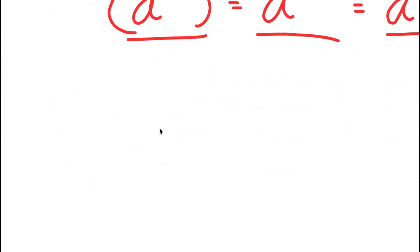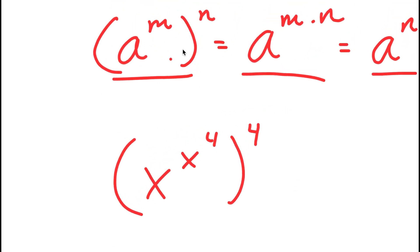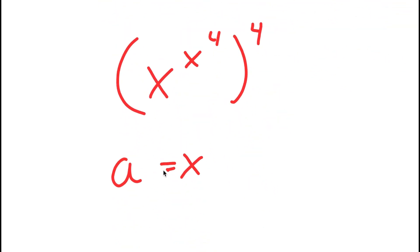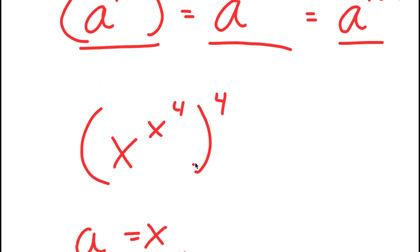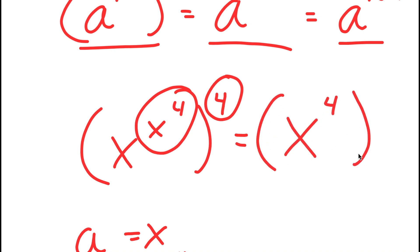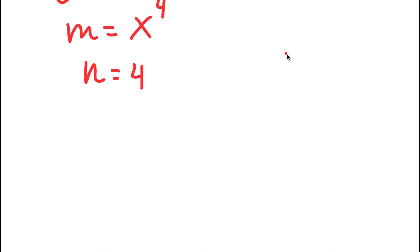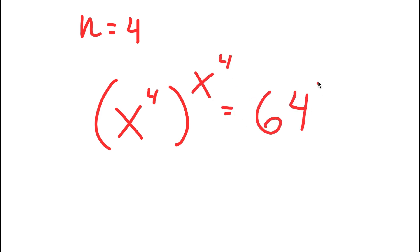In this case I have x to the power of x to the power of 4, to the power of 4. For this property I can think of a as x, m as x to the power of 4, and n as 4. So now I can switch the places of x to the power of 4 and 4, giving the same thing as x to the power of 4 to the power of x to the power of 4. Plugging this back into my equation, I get x to the power of 4 to the power of x to the power of 4 is equal to 64 to the power of 4.